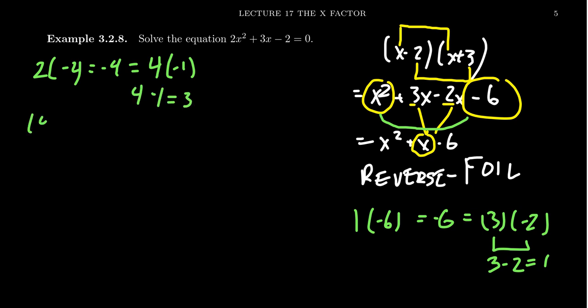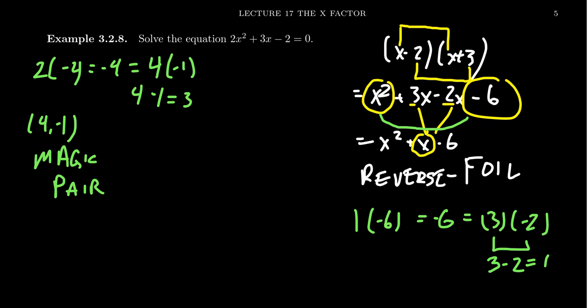Such a pair — four and negative one — we're going to refer to this as a magic pair. I like to think of like Hercules searching for the magic pair upon the tree of Poseidon or something like that. We're looking for this magic pair: a pair of numbers which will multiply together to give us the first and last term, but adds together to give us the middle term. Because if we do that, we're going to replace the middle term with this magic pair.